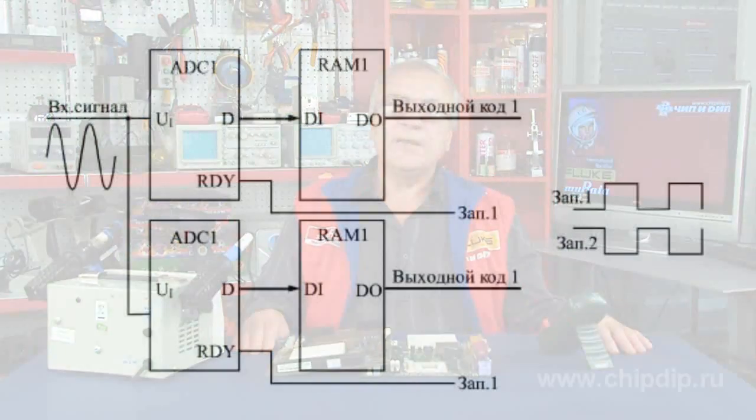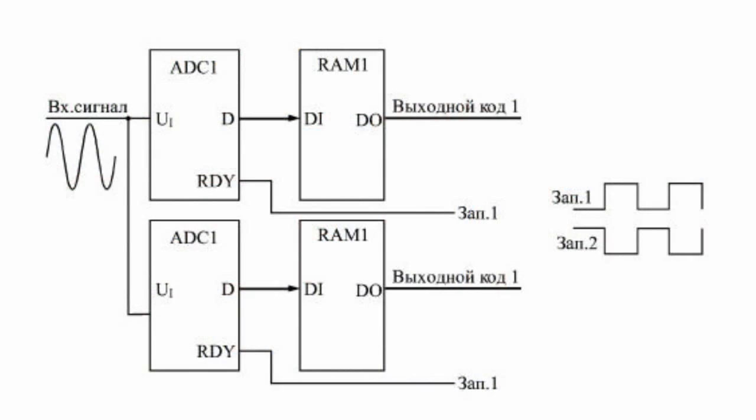Finally, the last scheme which we will discuss can double the speed of the ADC, rather raise twice the frequency of writing sample codes of the input signal to the buffer memory. The idea of this scheme is very simple. There are two ADCs and two buffers that work in turns.